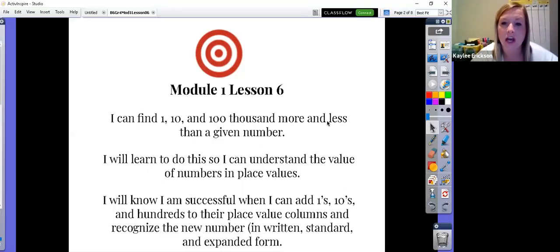You're going to learn to do this so you can understand the values of numbers in their place value. When we just have random numbers, they don't have much value to them. The value of 10,000 versus a $1 bill is going to be a big difference. You're going to know you're successful when you can add ones, tens, and hundreds to their place value columns and recognize that new number in written, standard, and expanded form.